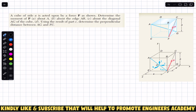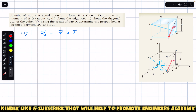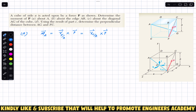First, we find the moment about point A — this is the solution to Part A. The moment about point A is found using the cross product method: M_A = r × P, where r is a position vector starting from A and ending on any point on the line of action of force P. We can use r of F relative to A, or r of C relative to A — both give the same answer.